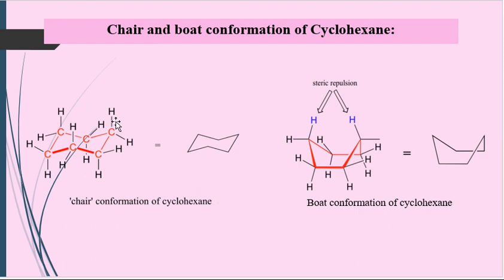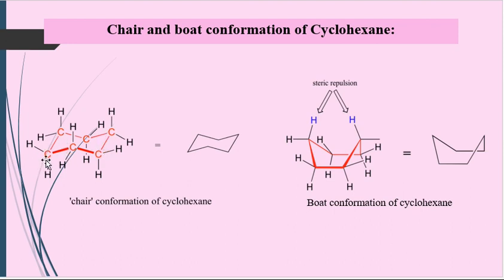This is the chair conformation of cyclohexane. In this chair conformation, we label carbon number one, two, three, four, five and six. These four carbon atoms — carbon number two, three, five and six — are in the average plane. Carbon number one is above the average plane and carbon number four is below the average plane. This is the chair conformation of cyclohexane.